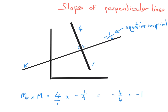Another way of thinking about it: if the slope of one line is 4, then the slope of the perpendicular line will be the negative reciprocal of 4. That means 4 is really 4 over 1 — you turn that upside down, making it 1 over 4, and then make it negative. So it's the negative reciprocal.